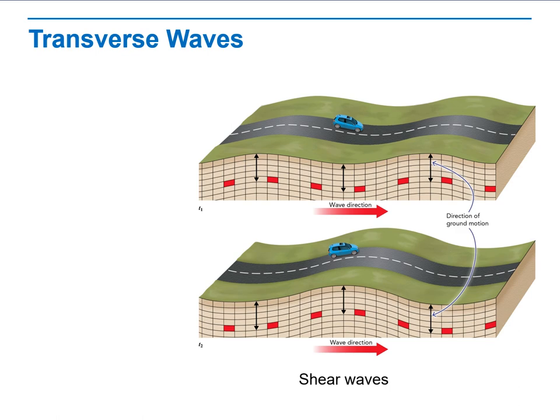First type of waves is what? Transverse waves. You already took that before, but we're discussing it again. Again, the image represents the movement of Earth's surface during an earthquake.